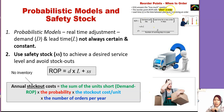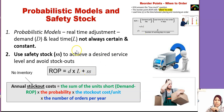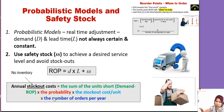Now we look at ROP again, but this time ROP involves safety stock. This means our supplier is not reliable — sometimes they cannot send supply on time, so we need safety stock, which is like a backup stock. We go into the probabilistic model. The ROP formula becomes D × L plus SS (safety stock). When we have safety stock, annual stockout cost is introduced — this occurs when we have no supply to process.